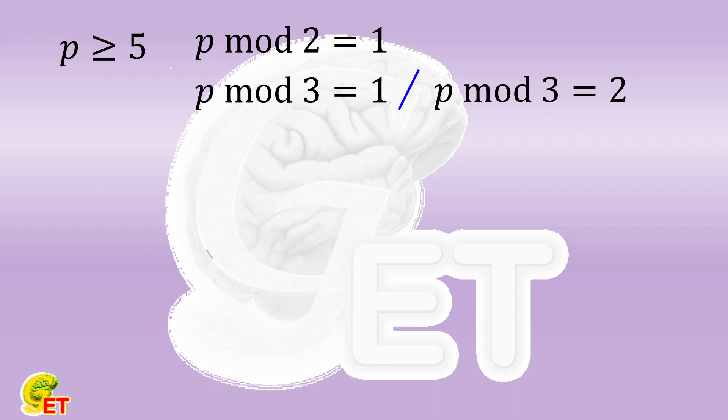Please don't forget, the remainder when it is divided by 2 is 1. So the remainder of it divided by 4 cannot be 2. That is, it can only be 1 or 3.